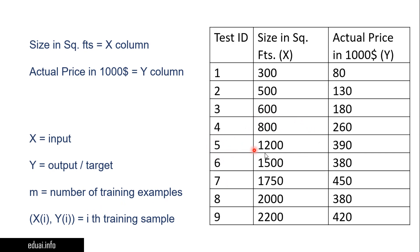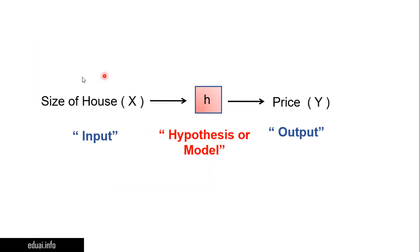Similarly, x(5) is 1200, x(6) is 300, x(7) is 750. y(4) is 260 and y(6) is 380. I hope you understand what x(i) and y(i) mean. The size of the house is x and the price of the house that we need to predict is the output. We provide the size of the house to the hypothesis, or model. In mathematical terms, we call our model a hypothesis.